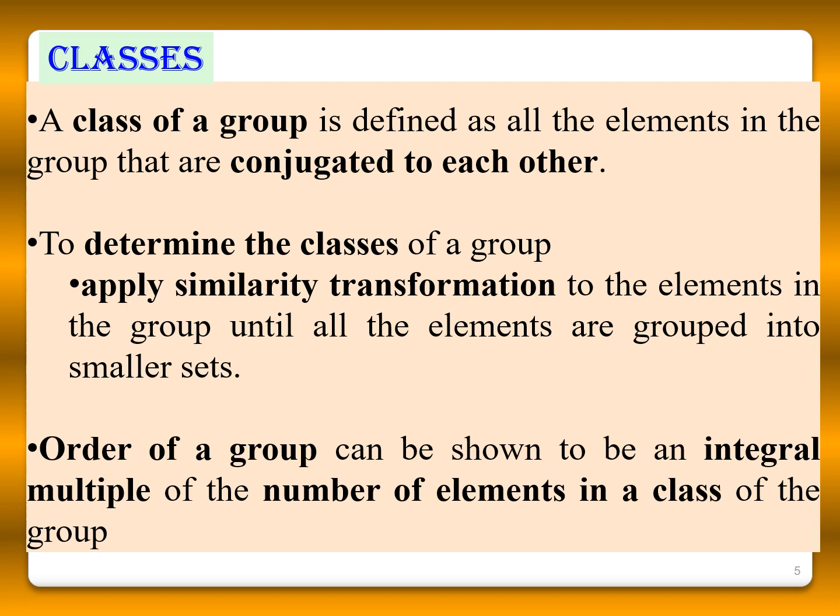So, a class of a group is defined as all the elements in the group that are conjugated to each other. To determine the class of the group, you have to apply the similarity transformation to the elements in the group until all the elements are grouped into smaller sets. In addition, the order of a group can be shown to be an integral multiple of the number of elements in the class of the group.